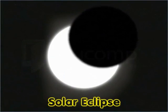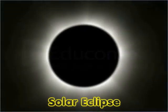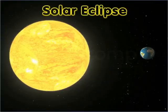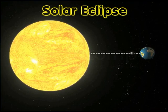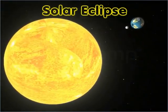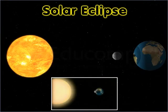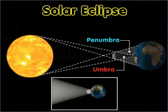Let us now find out how a solar eclipse occurs. A solar eclipse occurs at New Moon when the Sun, Moon and Earth come in a straight line with the Moon in the middle. The Moon obstructs the path of sunlight, and so the shadow of the Moon falls on the Earth.